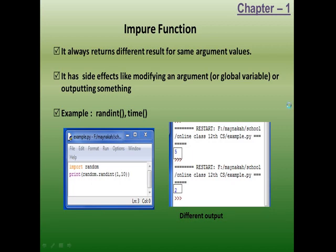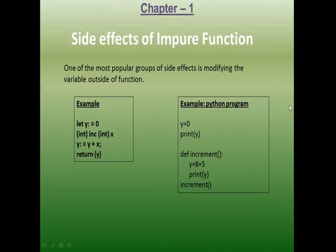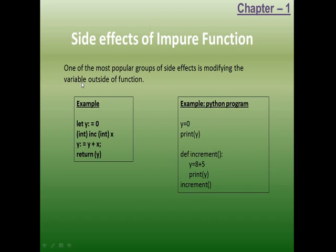Another aspect of impure functions is side effects. One of the most popular groups of side effects is modifying the value of a variable outside of a function. I hope you have learned about the scope of variables — inside a function, outside a function, local variable, global variable. We will see this in detail in Python.